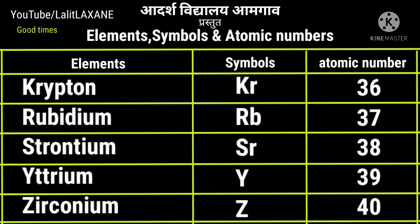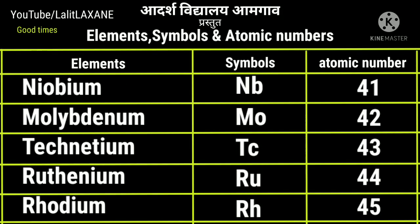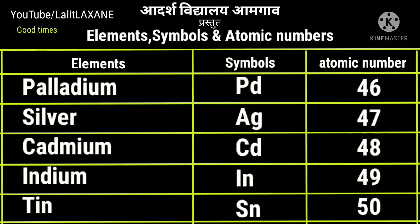Rubidium Rb, 37. Strontium Sr with atomic number 38. Yttrium Y with 39 and zirconium Zr with atomic number 40. With atomic number 41, there is niobium with symbol Nb. Then molybdenum Mo, atomic number 42. Technetium Tc with atomic number 43. Ruthenium Ru, 44, and rhodium with atomic number 45 and symbol Rh.